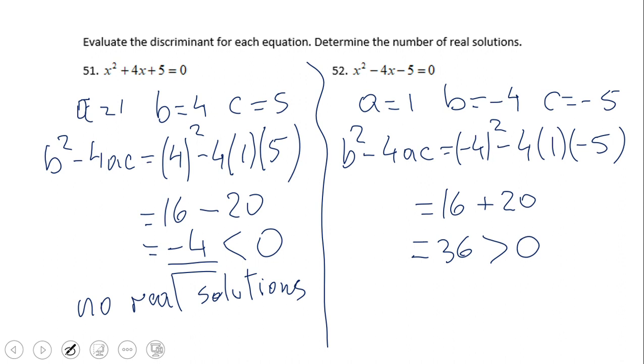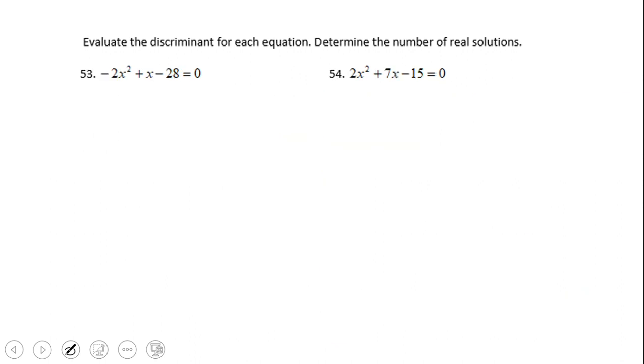For number 52, you should end up with the discriminant of 36, which is greater than 0. In this case, we say we have two real solutions.